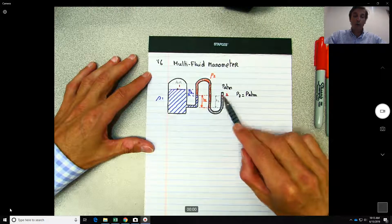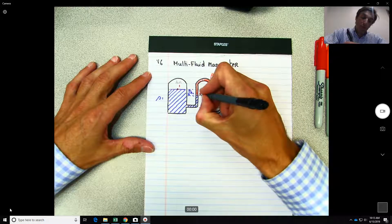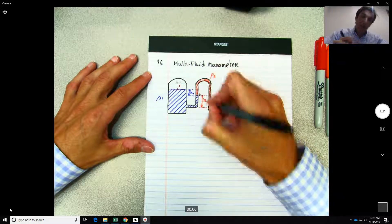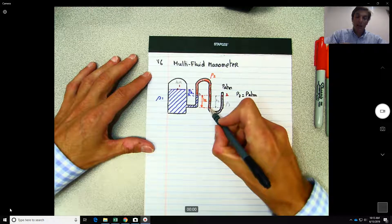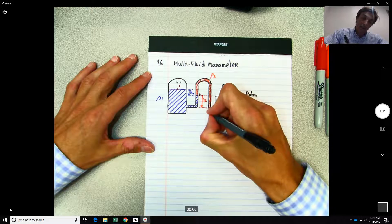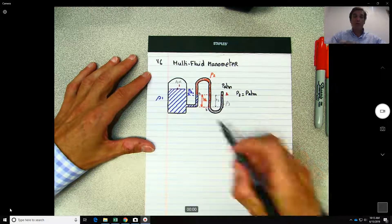So we know point one, point two, and maybe we need to know what would be the pressure here at this point here. Let's call it A. And at this point over here, let's say B.